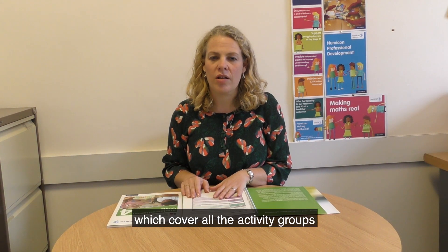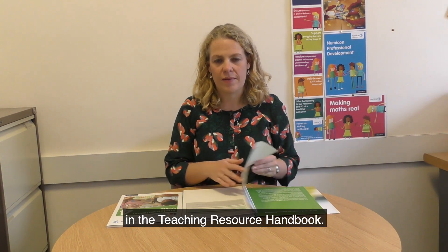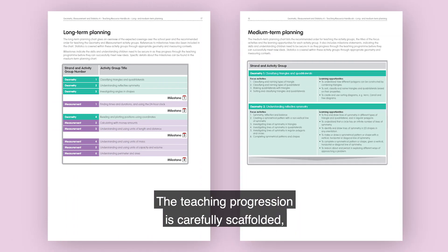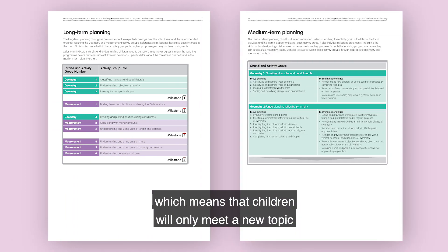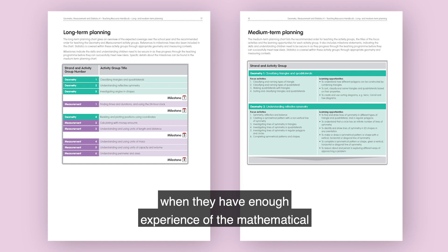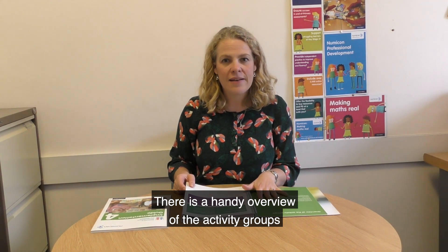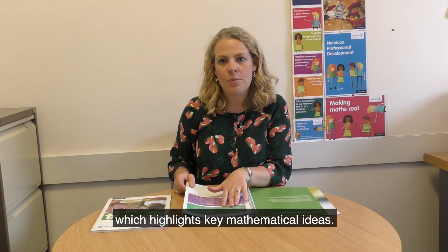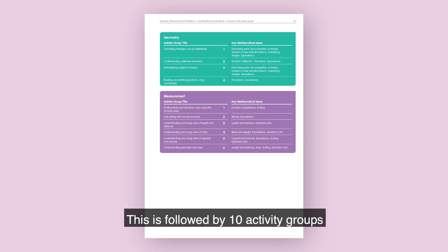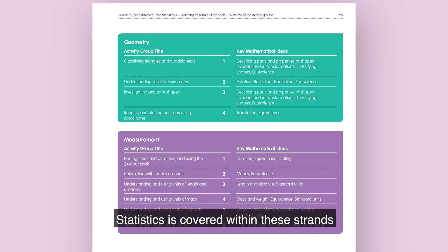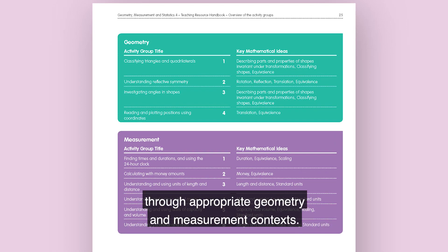There are long and medium-term planning charts which cover all the activity groups in the Teaching Resource Handbook. The teaching progression is carefully scaffolded, which means that children will only meet a new topic when they have enough experience of the mathematical learning that underpins it. There is a handy overview of the activity groups which highlights key mathematical ideas. This is followed by 10 activity groups which are arranged in two strands: Geometry and Measurement. Statistics is covered within these strands through appropriate Geometry and Measurement contexts.